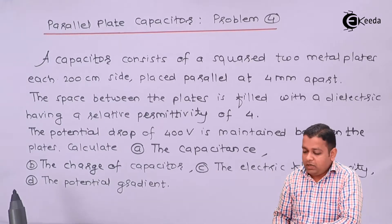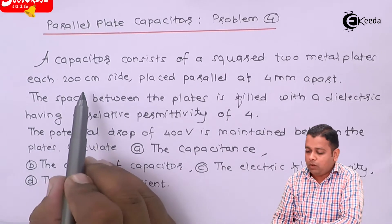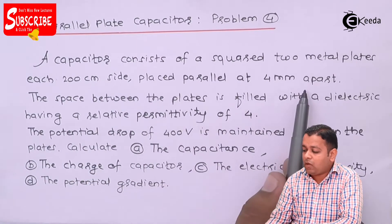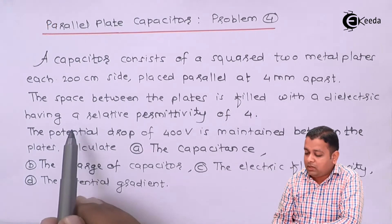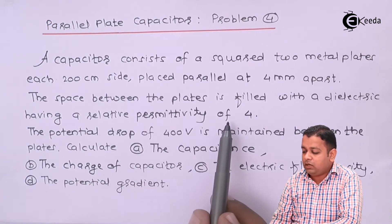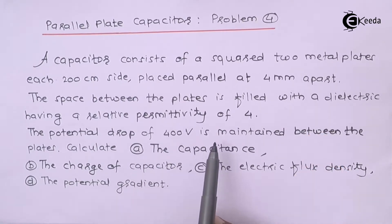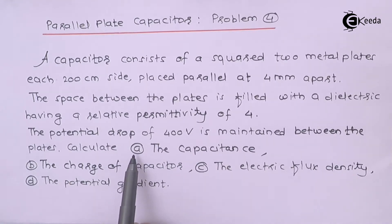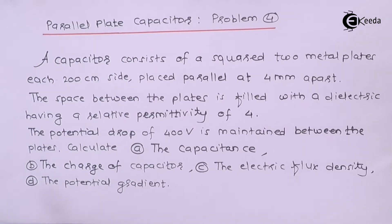So the problem statement is: a capacitor consists of two squared metal plates, each of 200 cm side, placed parallel at 4 mm apart. The space between the plates is filled with a dielectric having a relative permittivity of 4. A potential drop of 400 volts is maintained between the plates. We are to calculate four parts: the capacitance, the charge of the capacitor, the electric flux density, and the potential gradient.